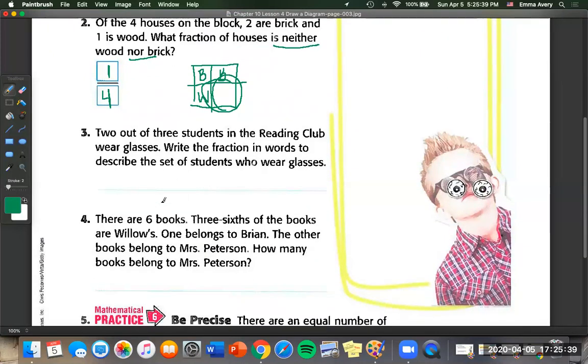Two of the three students in Reading Club wear glasses. Write the fraction in words to describe the set of students who wear glasses. So it tells us two out of three. So two over three is how we'd write it in numbers. But in words, we'd write two thirds. Just like that.